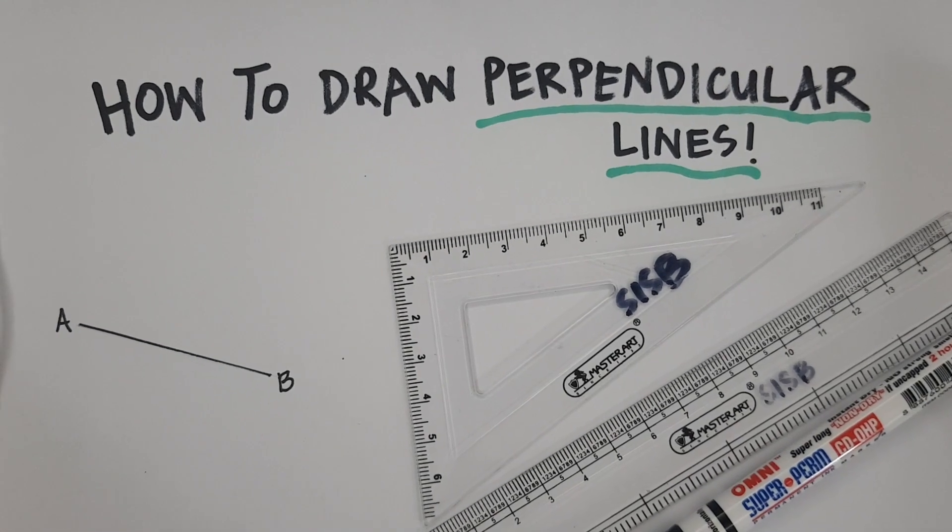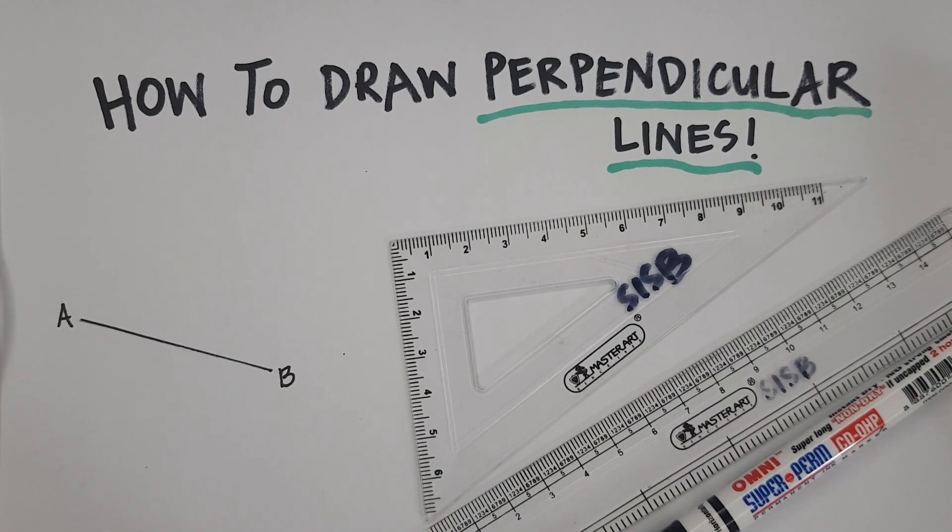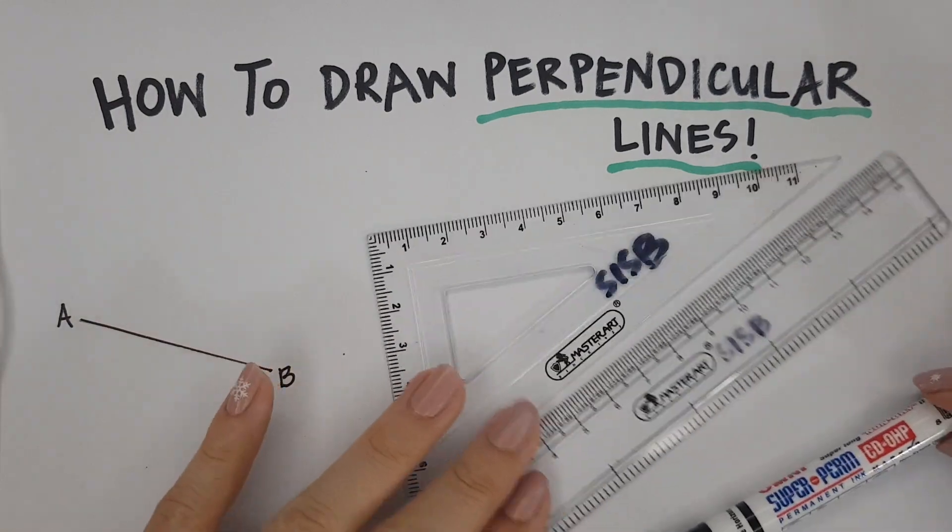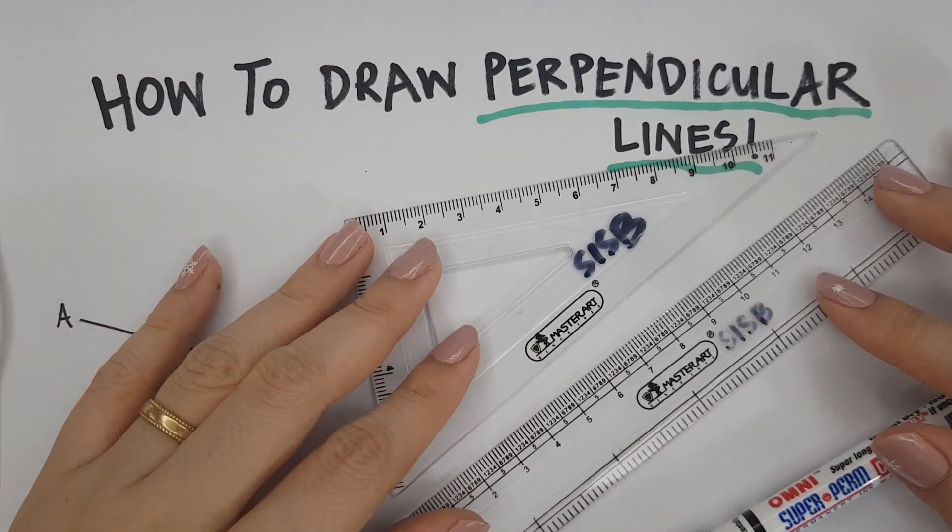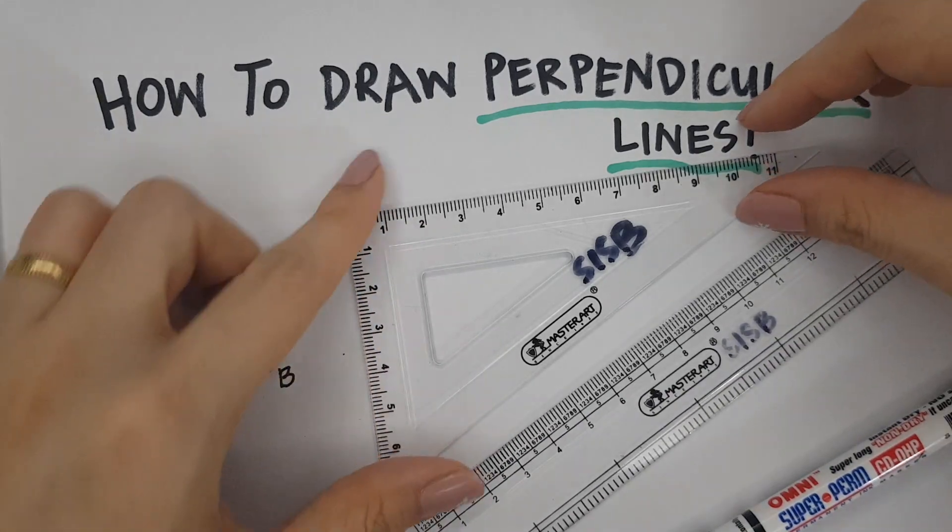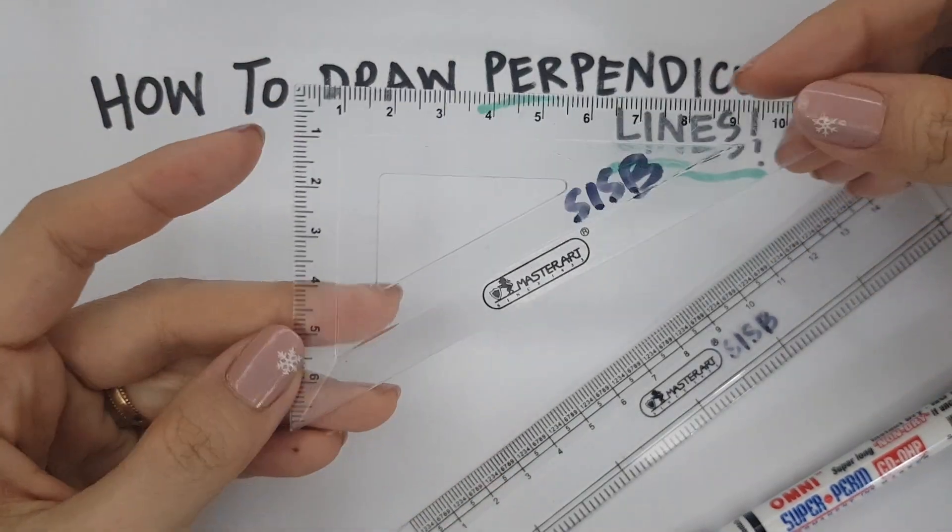Hi students, today we're going to learn how to draw perpendicular lines. And the stuff that you need to start drawing would be two rulers. One ruler, a normal ruler, and the second ruler, a set square.